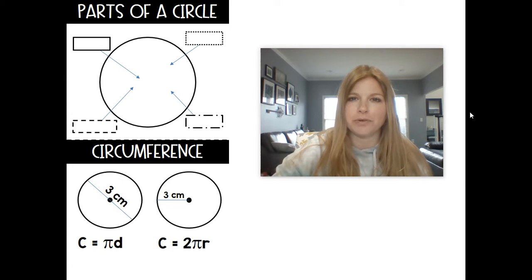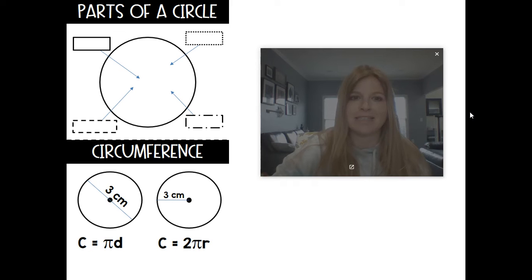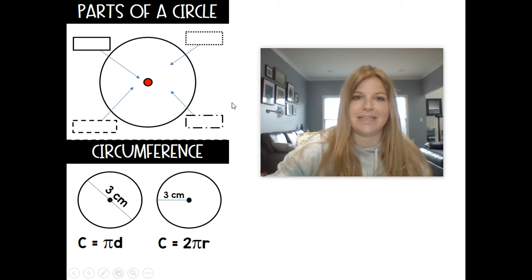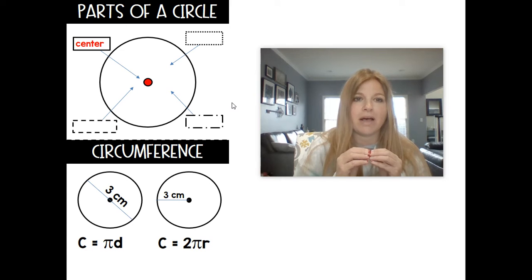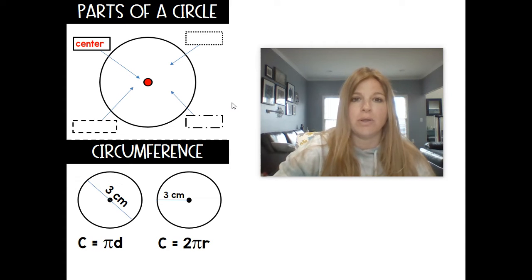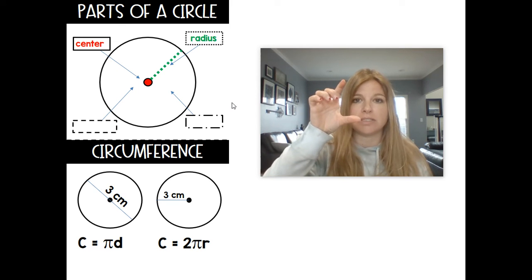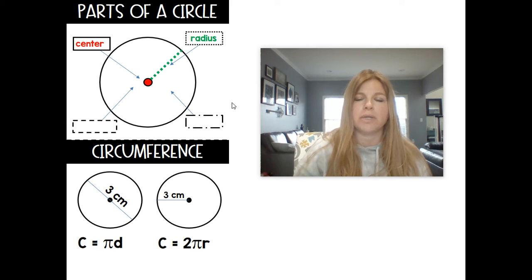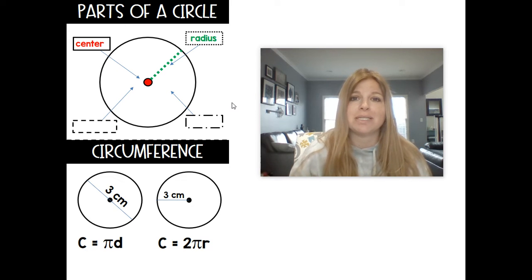The most important first part of understanding a circle is this point here, that point, which is simply the center. The center of the circle is obviously the middle point. The middle point of the circle, which is called the center, is connected to the edge of the circle by what's called a radius. A radius connects the edge of a circle to the center, and the radius, no matter where it is around the circle, is always congruent to each other. Any radius would be congruent to another radius. The plural of radius is radii, so I'd be able to say that a circle has all congruent radii.